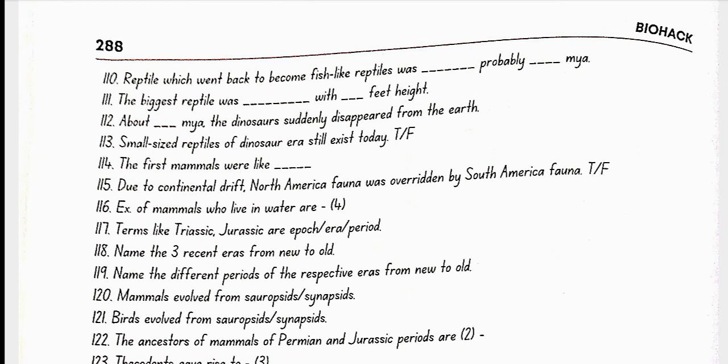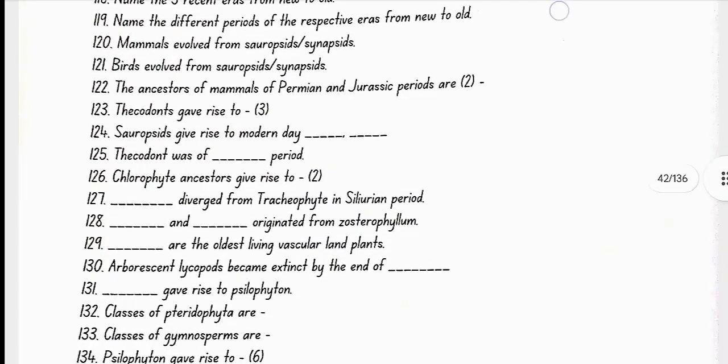Mammals evolved from Synapsids. Birds evolved from Sauropsids. The ancestors of mammals of Permian and Jurassic periods are Pelycosaurs for Permian and in Jurassic period, it is Therapsids. Thecodonts gave rise to Crocodiles, Birds, and Dinosaurs. Sauropsids give rise to modern-day Reptiles and Birds. Thecodont was Permian period.